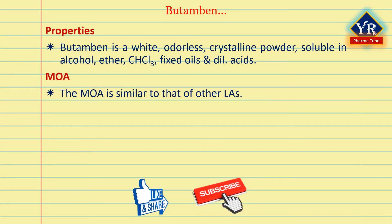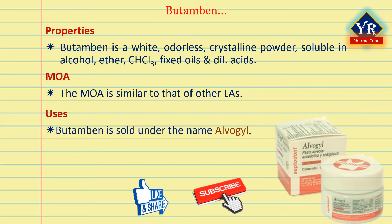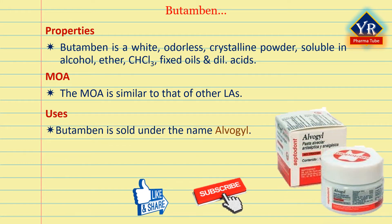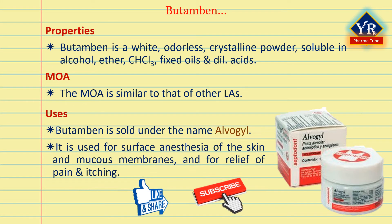The mechanism of action is similar to that of other local anesthetics. Butamben is sold under the name Alvogyl in Spain and Switzerland. It is one of the three components in the topical anesthetic Cetacaine. Its local anesthetic properties have been used for surface anesthesia of the skin and mucous membranes, and for relief of pain and itching associated with some anorectal disorders.